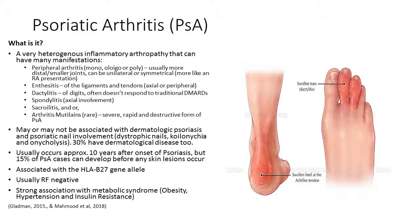Either in isolation or as part of the overall arthropathy picture, you'll get enthesitis of the ligaments and tendons, either axial or peripheral. Dactylitis of the digit often doesn't respond to traditional DMARD therapy and can be quite difficult to settle in the feet, particularly if that's where the condition initially manifested. Spondylitis refers to axial involvement. Sacroiliitis and arthritis mutilans — which is rare but has been seen in clinical practice — represents a severe, rapid, and destructive form of psoriatic arthritis that can be very devastating in terms of impacts on quality of life and function.